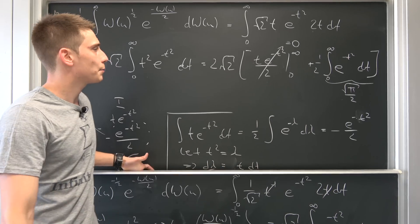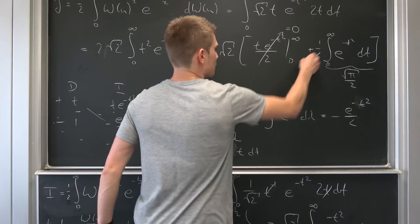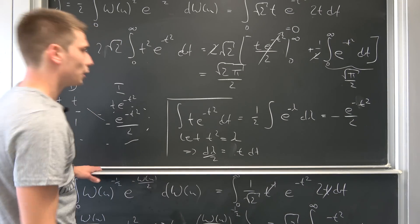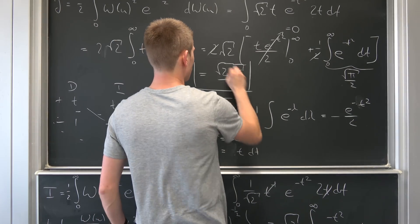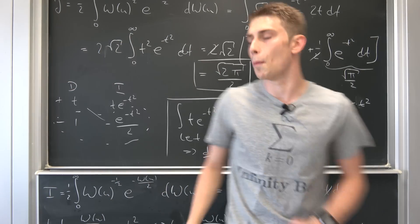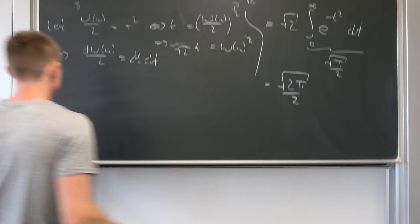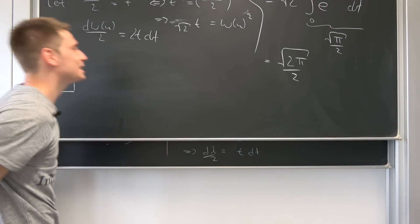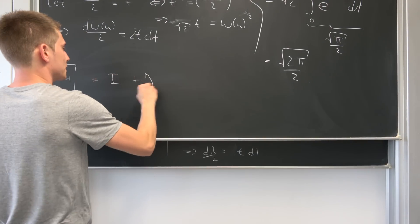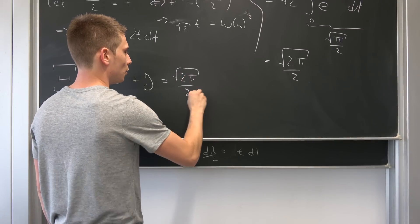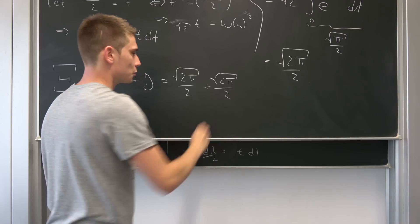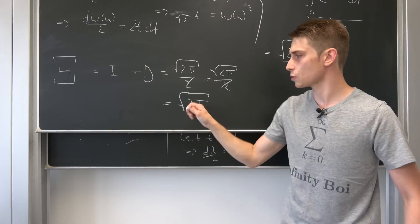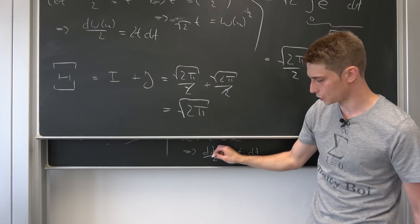The boundary terms cancel out, and we end up with √2·π/2 once again for J. So our original integral Ψ equals I plus J, which is √(2π)/2 plus √(2π)/2. That cancels in the process and we end up with the square root of 2π. That is the value of our original integral, and we're done.